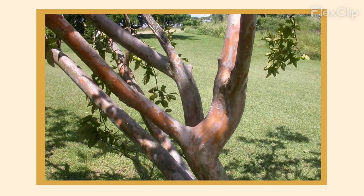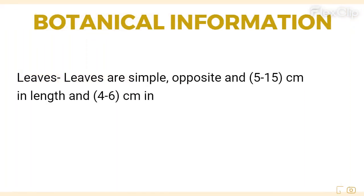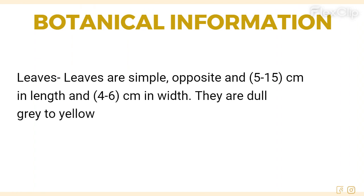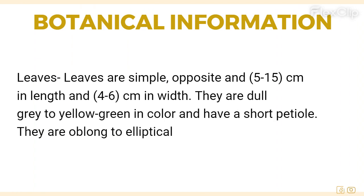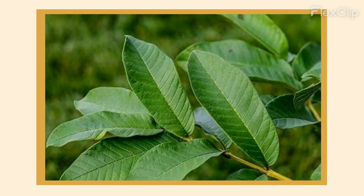Leaves: leaves are simple, opposite, and 5–15 cm in length and 4–6 cm in width. They are dull gray to yellow-green in color and have a short petiole. They are oblong to elliptical in shape with an entire margin. The veins are prominent and glands are dotted.